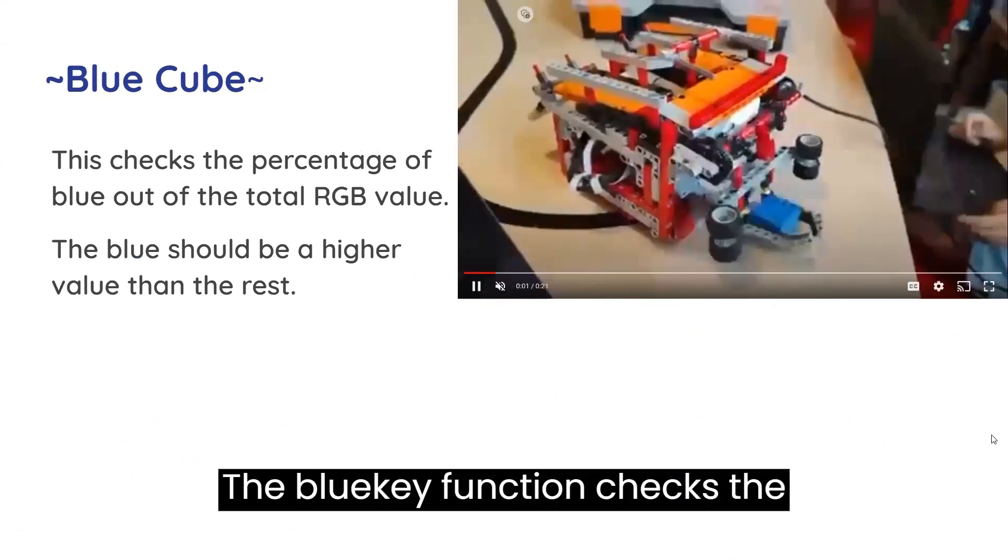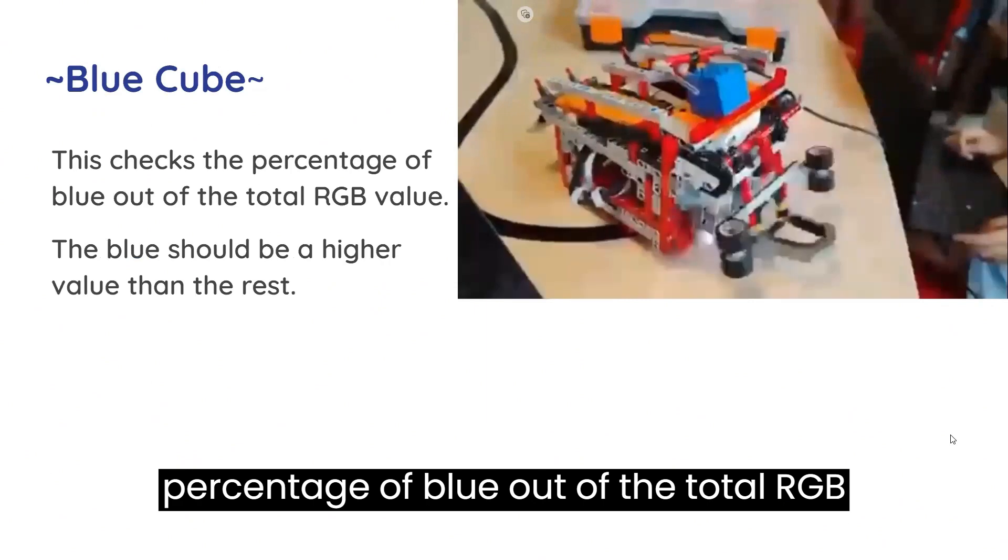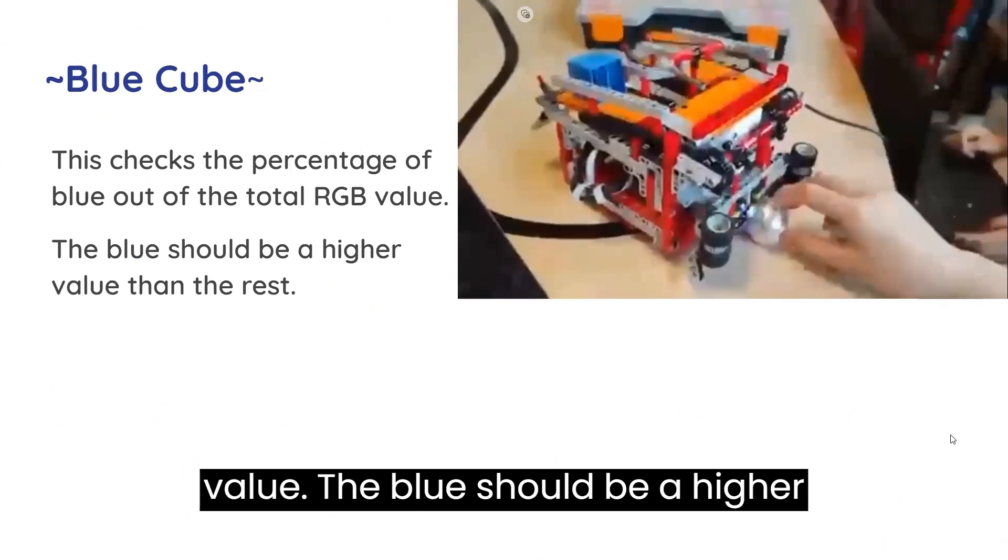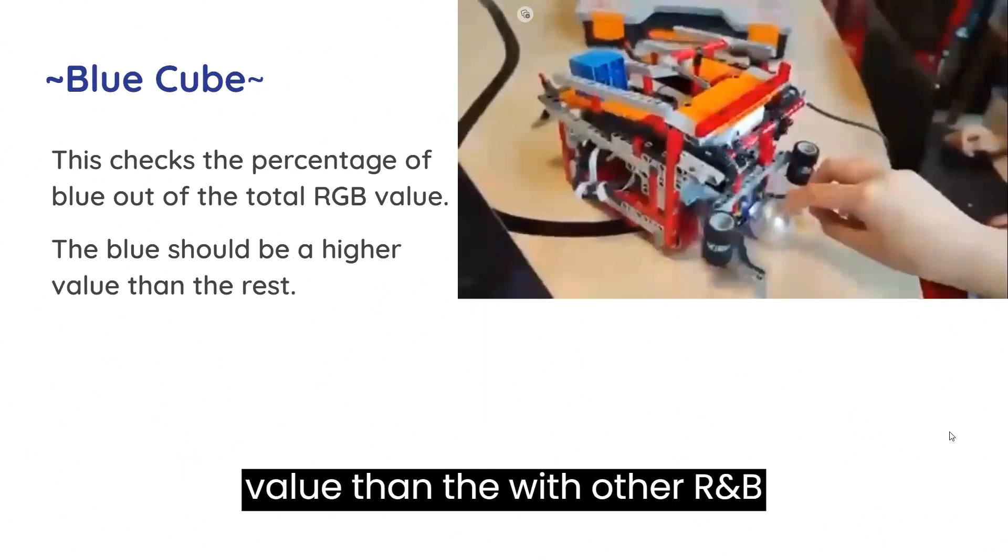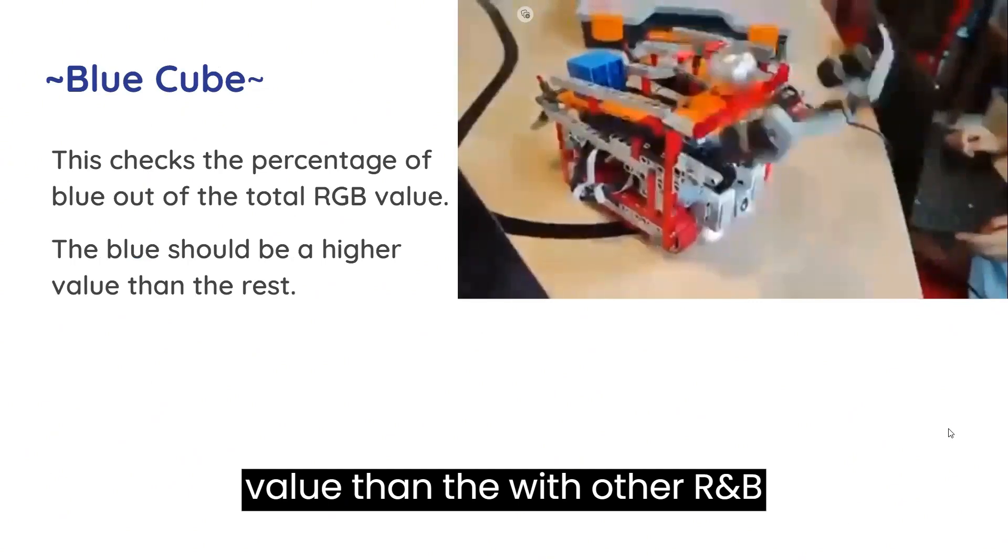The blue cube function checks the percentage of blue out of the total RGB value. The blue should be a higher value than the other R and G values.